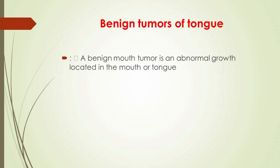Benign tumors of the tongue: a benign oral tumor is an abnormal growth located in the mouth or tongue. The growths are not cancerous and very rarely spread to other body parts. The condition is most common in adults over the age of 60, and the risk is greater in smokers.